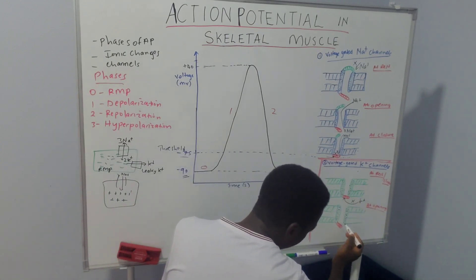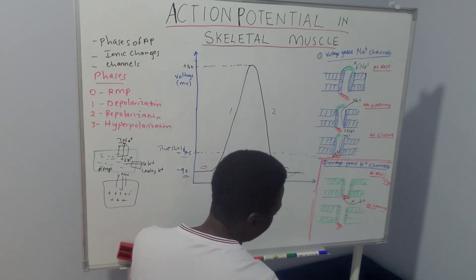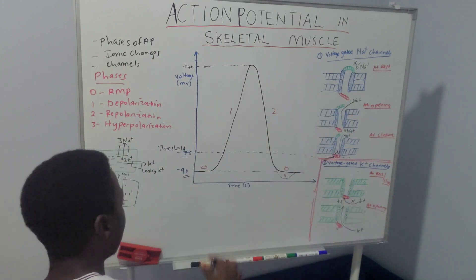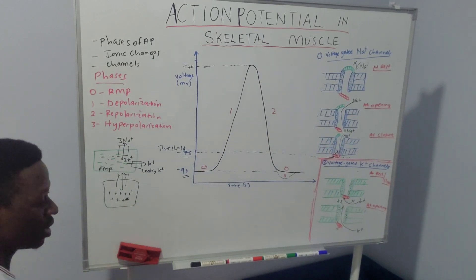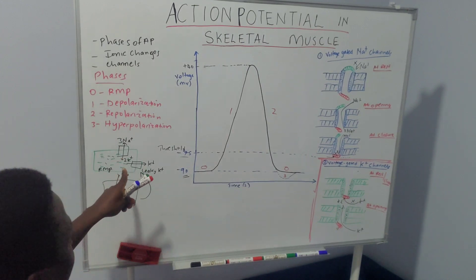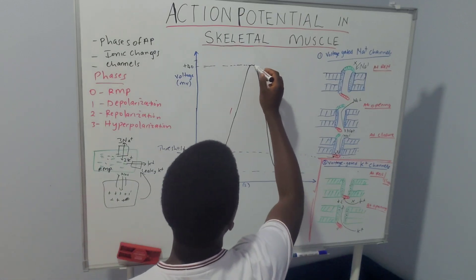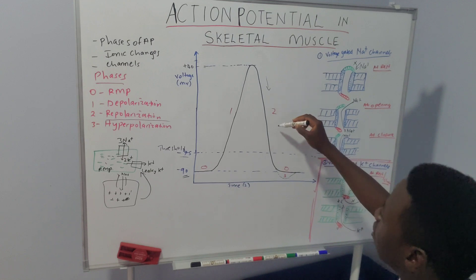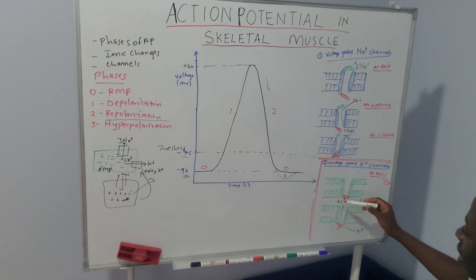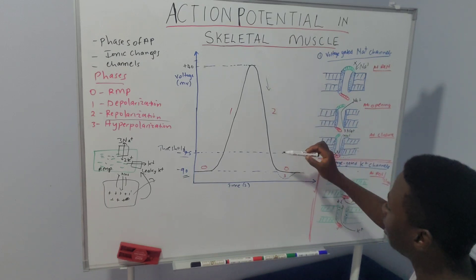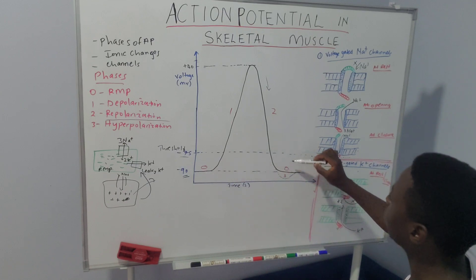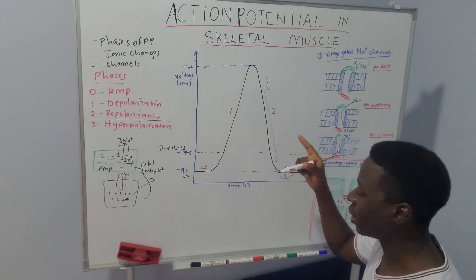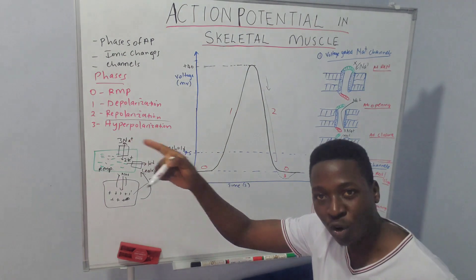When the voltage reaches its peak, it causes opening of the inner gate of the voltage-gated potassium channel, and now we can have an outflux of potassium ions. This outflux of potassium ions decreases the electropositivity within the cell so that the membrane can be restored back to the electronegative resting state. This is phase 2, repolarization — due to the opening of voltage-gated potassium channels that cause an outflux of potassium ions.